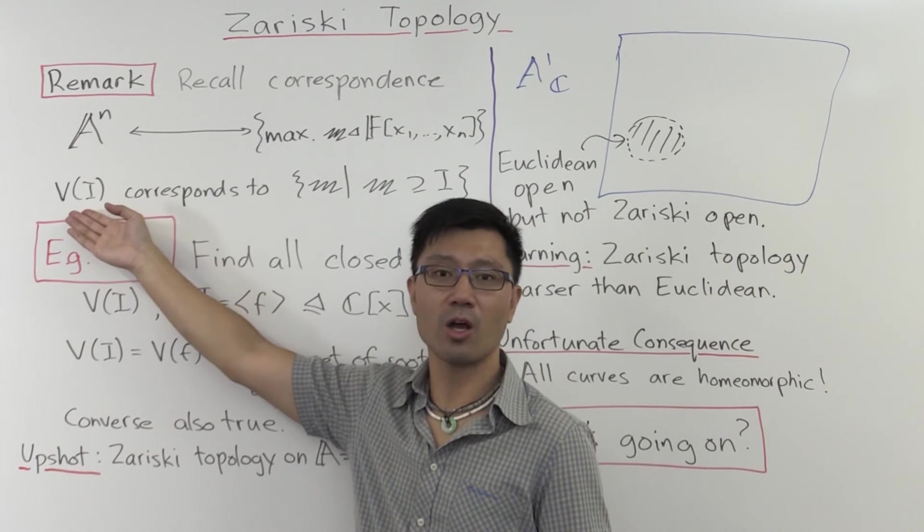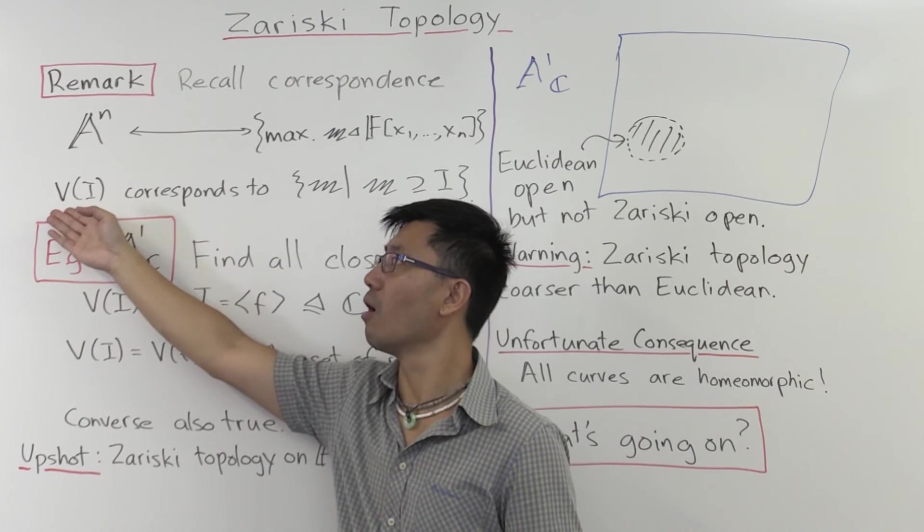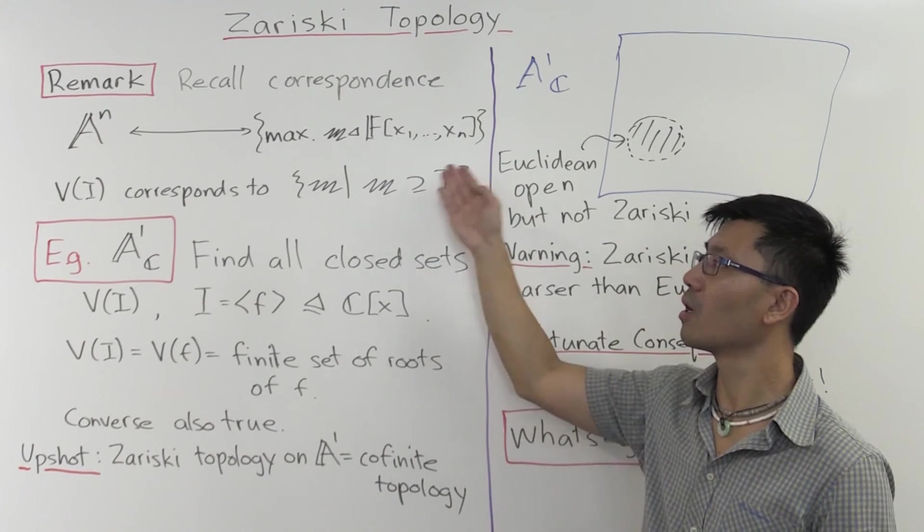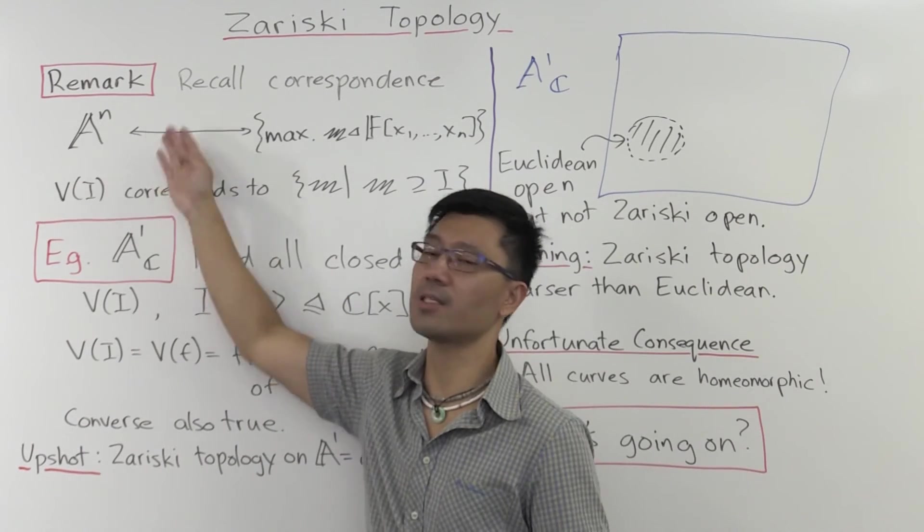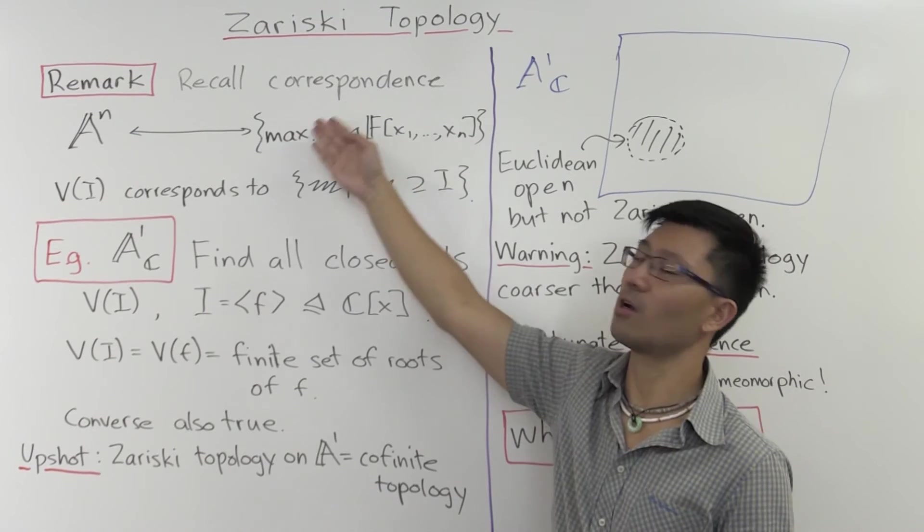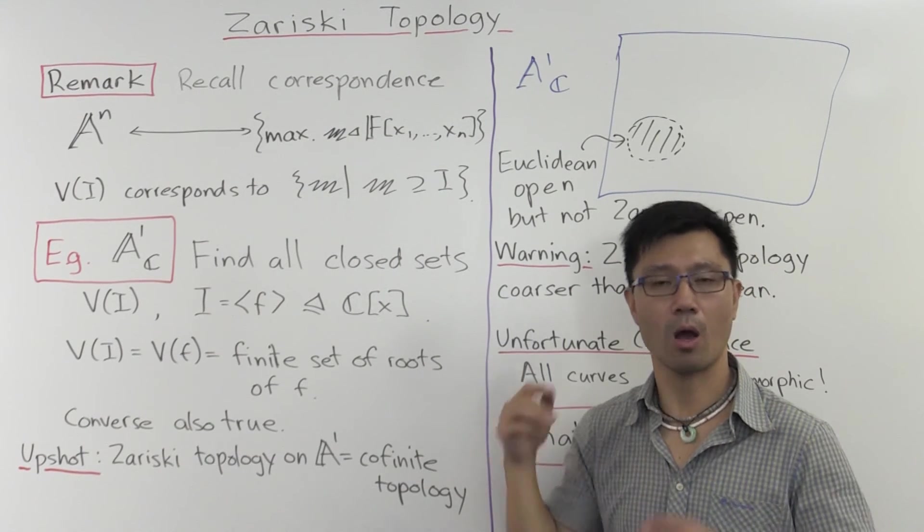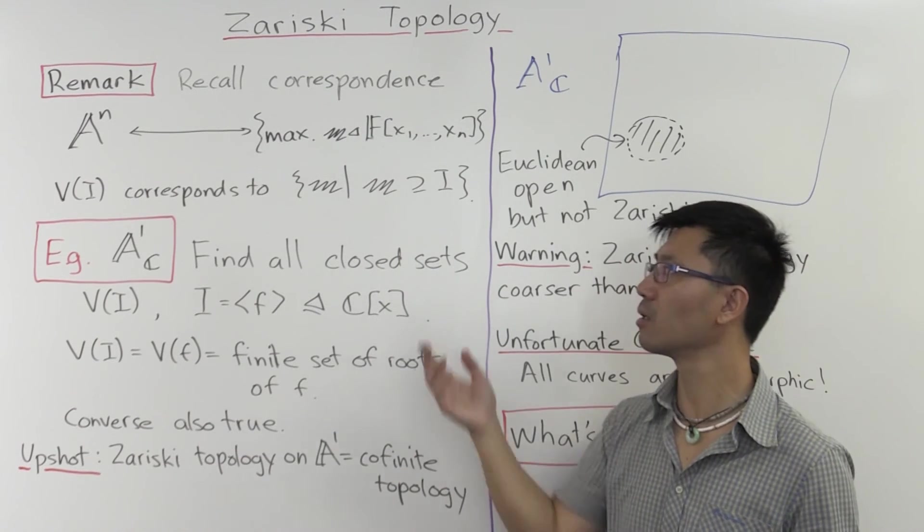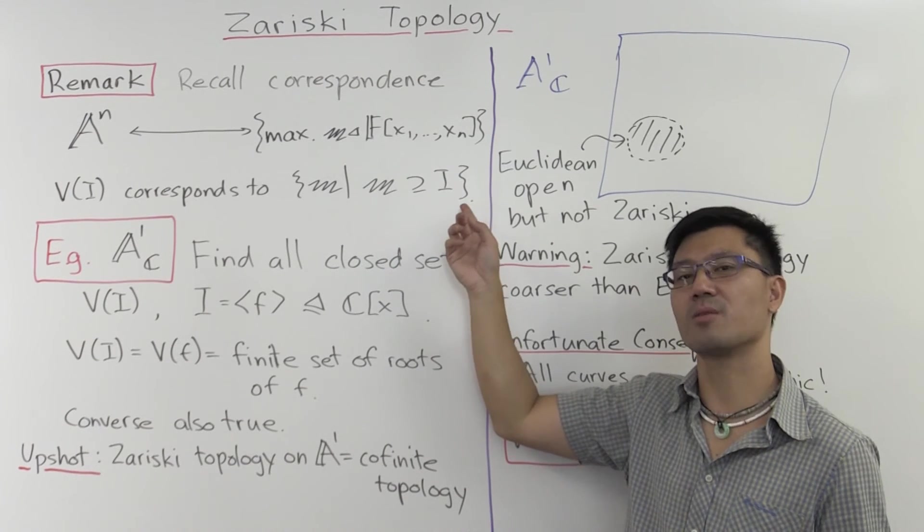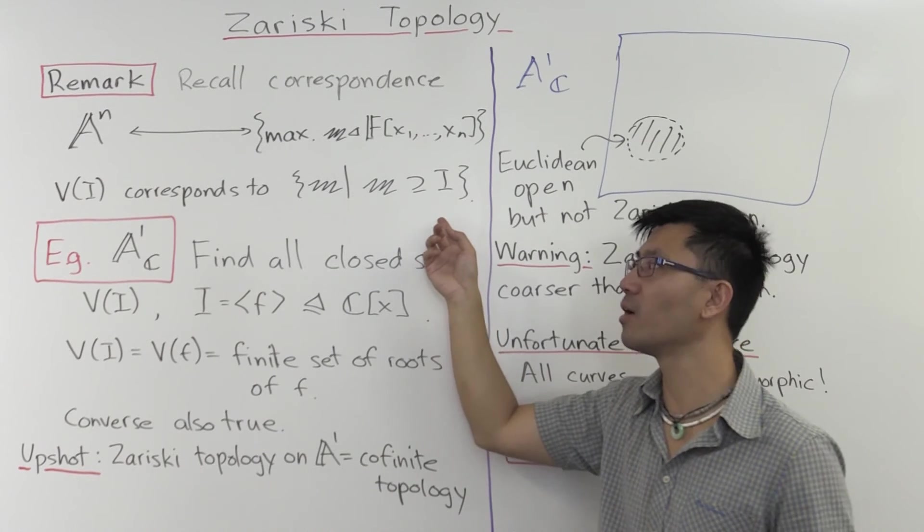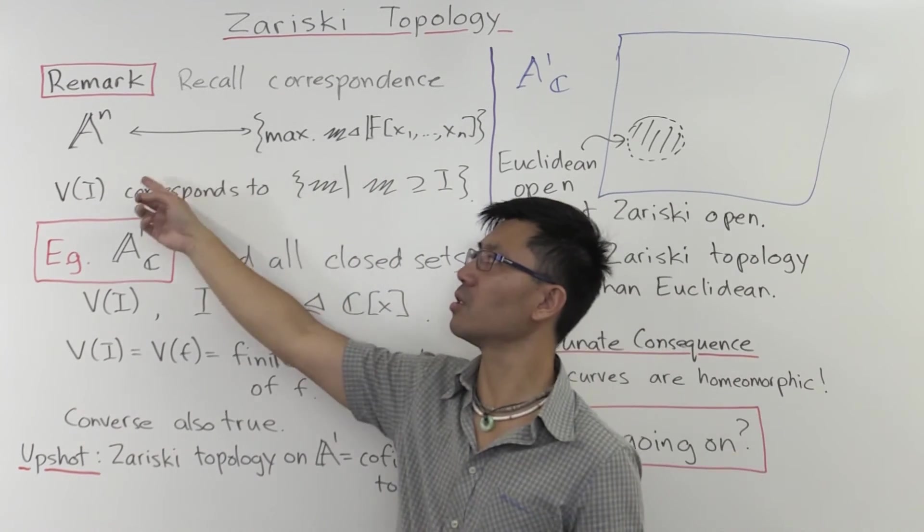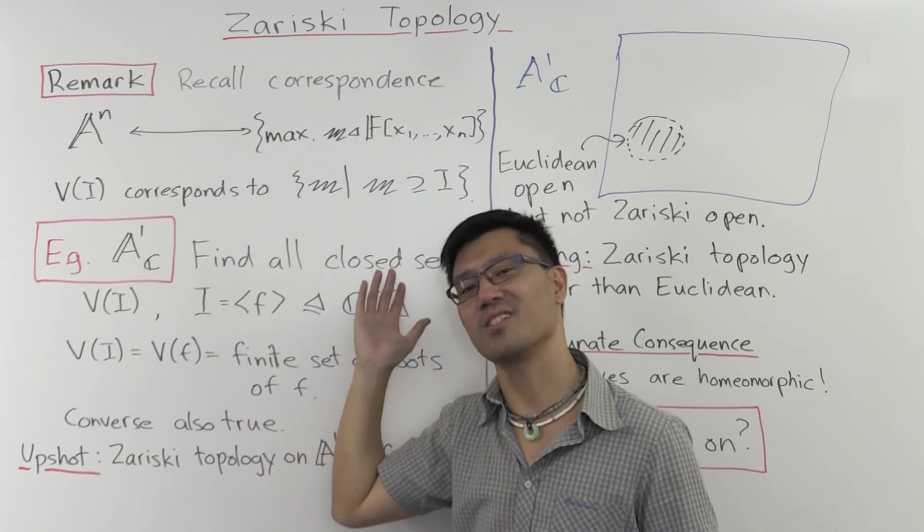So the closed set that corresponds to the variety of the ideal I, that's some subset of this. So it should correspond to some subset of maximal ideals. And which maximal ideals are those? They're just the maximal ideals which happen to contain I. So that's the most natural thing that you can think about. And that's the answer. And if you just go through this correspondence, you can easily check that this is indeed true.